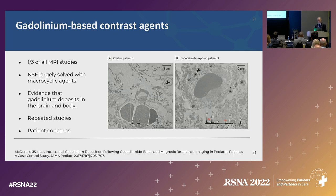I want to talk about gadolinium. NSF has been largely solved by macrocyclic agents, but now we know that even in patients with normal renal function, gadolinium deposits in the body. A lot of patients get repeat scans, and we definitely see people with patient concerns about this.